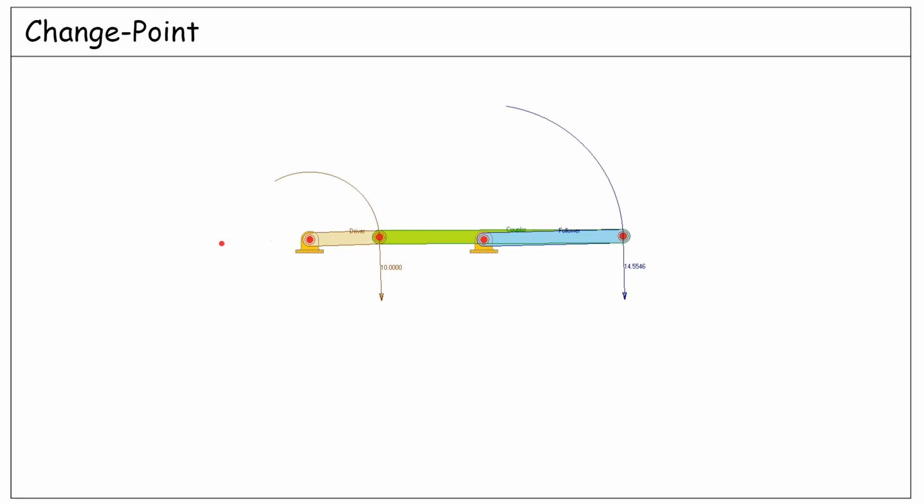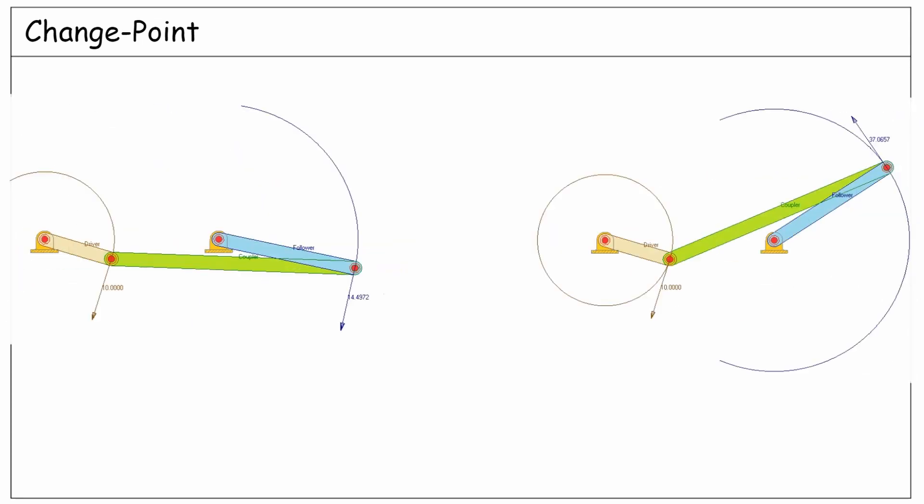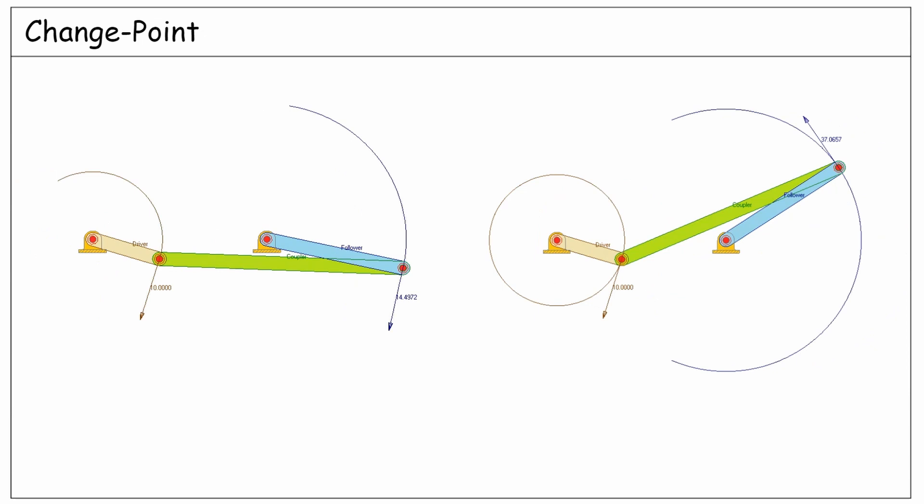It might rotate at either of the two opposite directions depending on some causes such as the gravity or the moment of inertia of the follower link. Notice that in both motions, the direction of rotation for the driver link is the same.